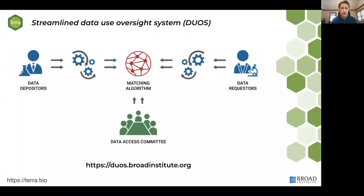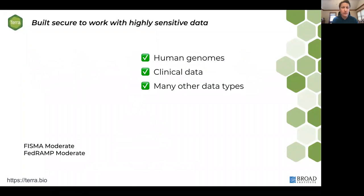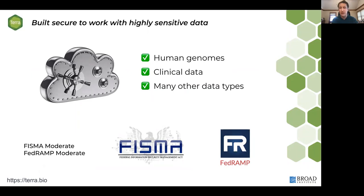DUOS is an important system for us. There's also the more general aspect of security. A lot of the data we store is of human origin — many human genomes, which are possibly the most fundamentally identifying data you could imagine — along with clinical data and other sensitive and protected data types. This system is designed to house such data securely and is accredited to fairly stringent levels. We continuously work to monitor, audit, and improve our security infrastructure to keep data safe.